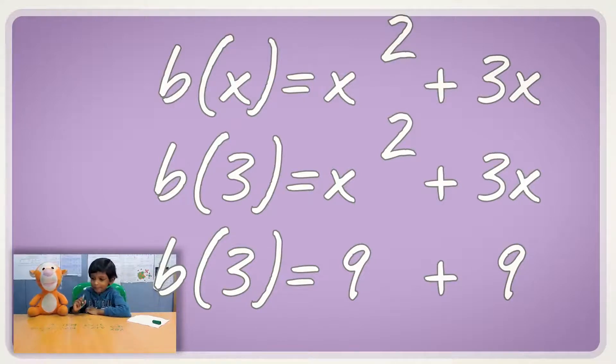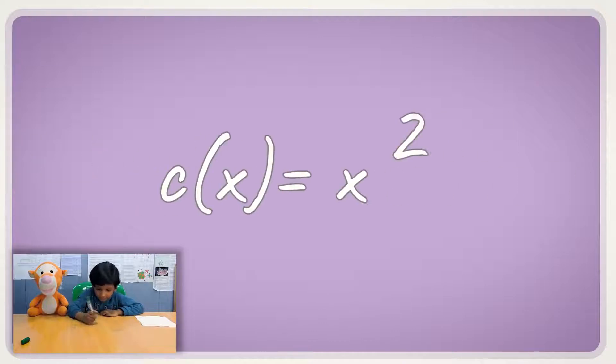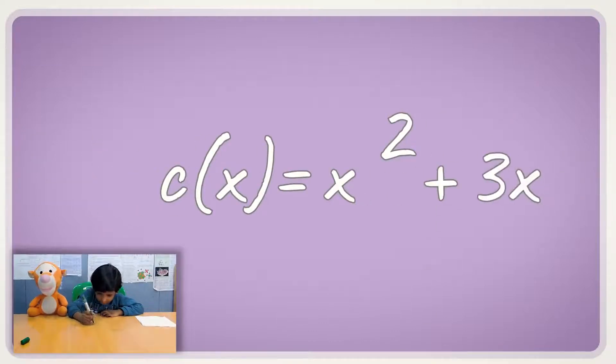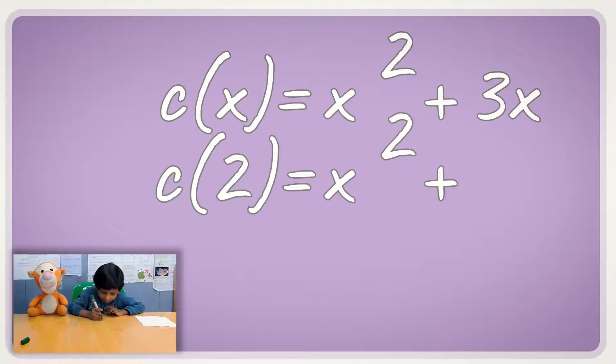Then let's do one more. Let's check your own question. Yeah. Let's check it out. Okay. c(x). Okay. c(x) equals x squared plus 3x. And let's make x equal to... Okay. If we written this as 2, we need to make any x is equal to 2. Okay.